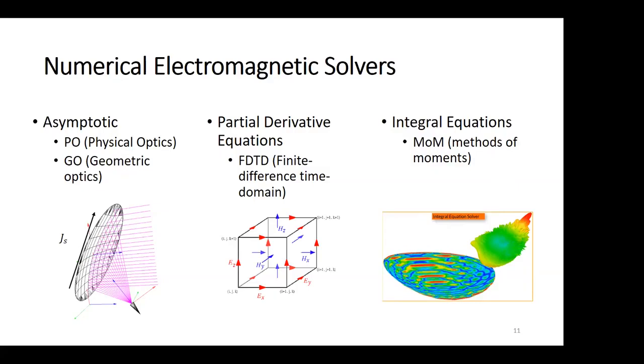Most reflector designers will be tempted to use physical optics or geometric optics. Physical optics utilizes the ray optics to predict the current on the surface of large metallic structures, such as our reflector, and then calculate the scattering radiation from the surface of the structure by integrating those fields over the surface.